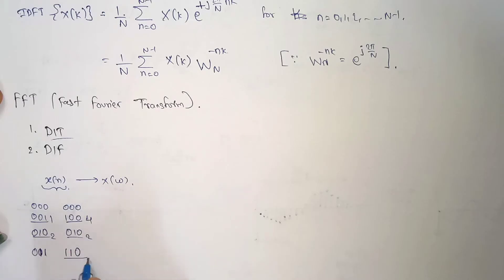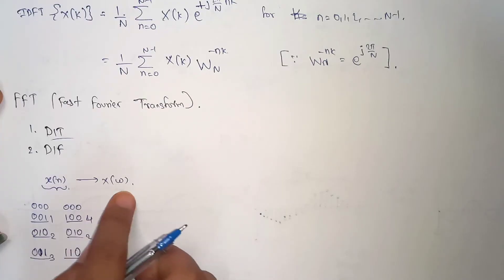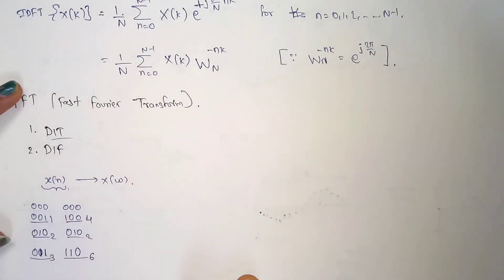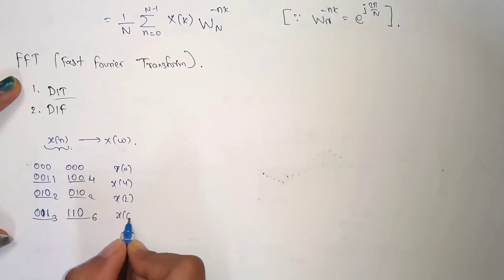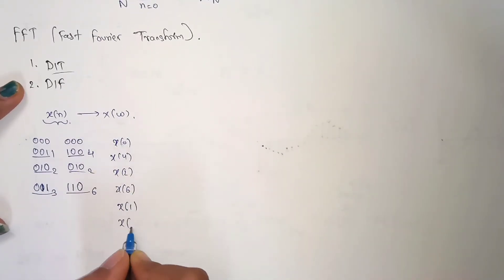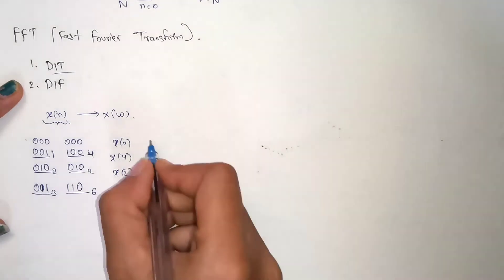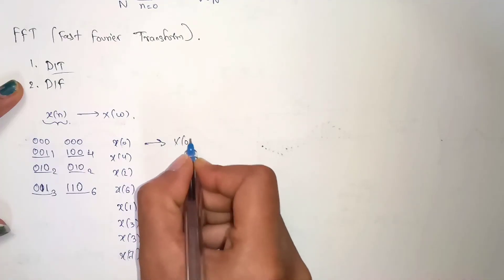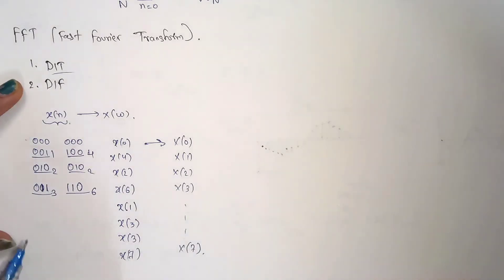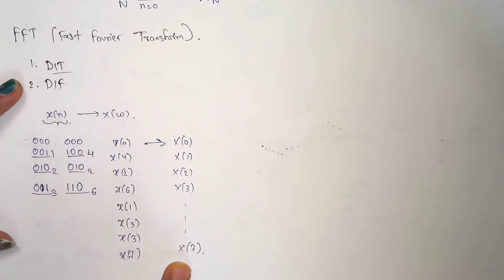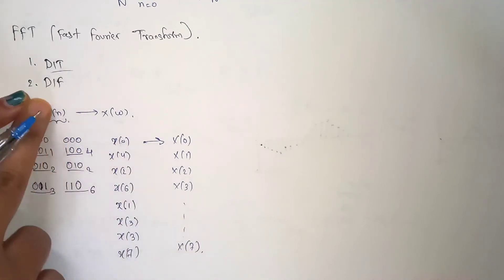Continuing the bit-reversal: 010 reversed is 010, which is still 2. And 011 reversed becomes 110, which is 6, whereas the original was 3. So we take the bit-reversal of each index number. The input order in Decimation in Time becomes x(0), x(4), x(2), x(6), x(1), x(5), x(3), x(7), while the output is the normal ordered X(0), X(1), X(2), ..., X(7).